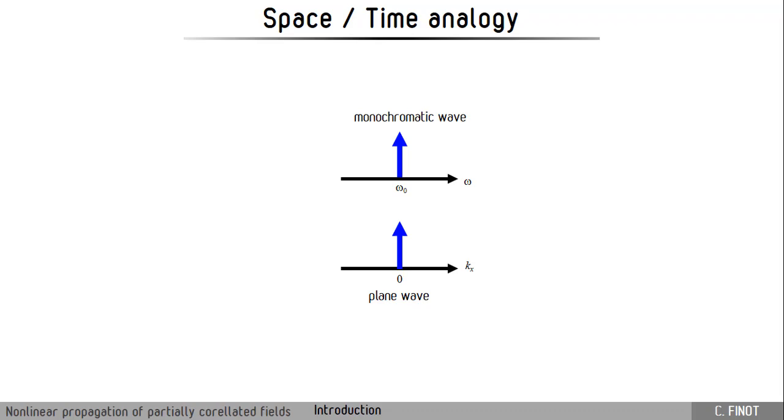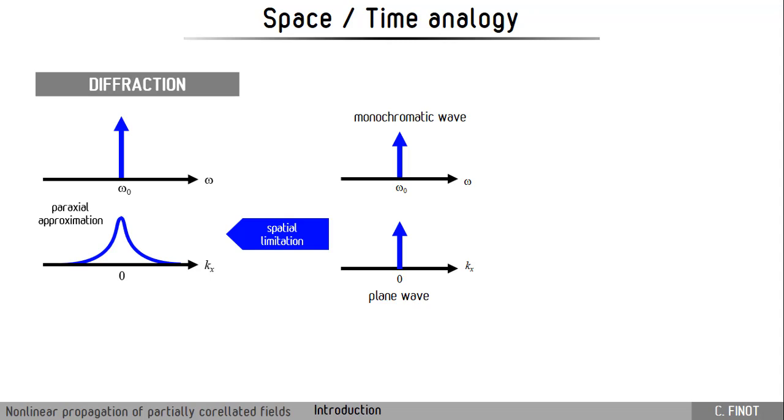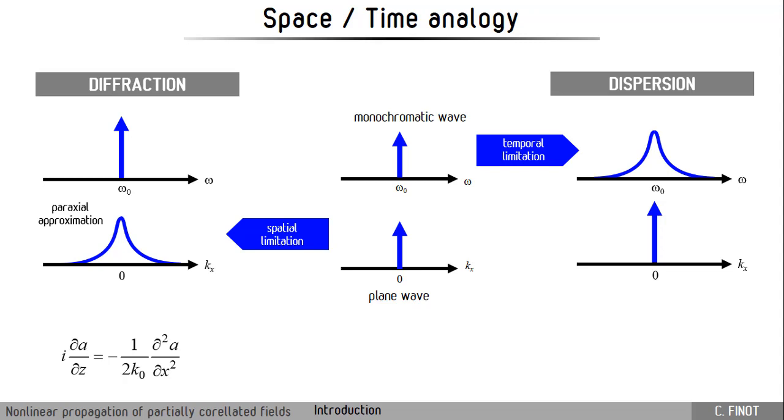The idea is to further explore the analogy that can be drawn between the spatial and temporal domain. If you start with the simplest example of a plane wave which is monochromatic, if you limit this wave in the spatial domain then you will be affected by diffraction. In the 1D case it can be simply governed by this equation. Now if you limit your wave in the temporal domain you will experience dispersion, and the propagation is ruled by these equations. As you see, the two equations are quite similar - they are formally identical, and this is the basis of the space-time analogy.